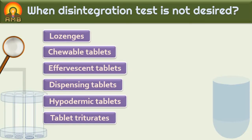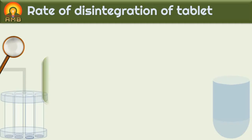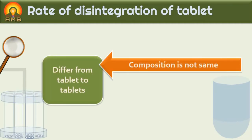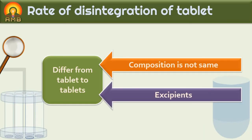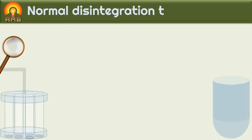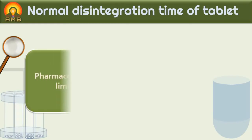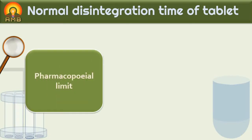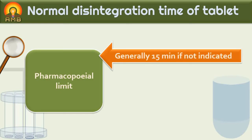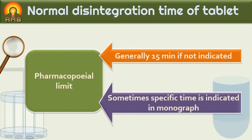The rate of disintegration of tablets differs from tablet to tablet as the composition of tablets is not the same. Excipients used in the formulation of a tablet affect the disintegration time. Generally, if the disintegration time is not indicated in the monograph of a drug, it is considered as 15 minutes. Sometimes a specific time is indicated in a specific monograph.